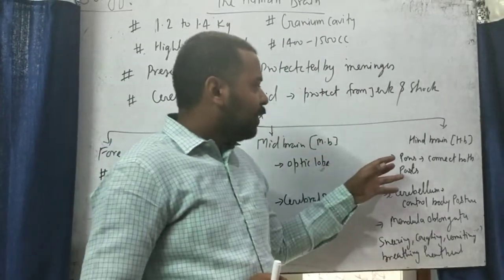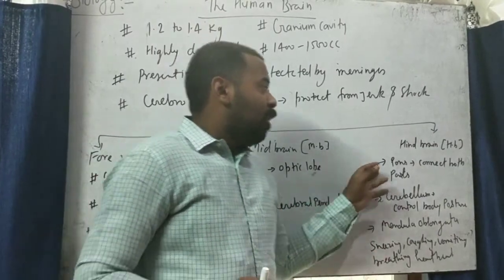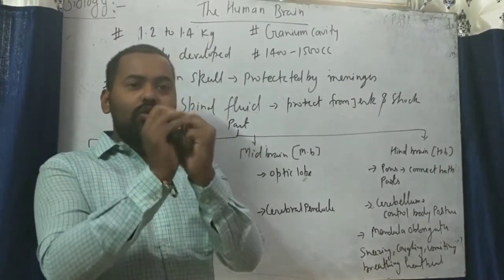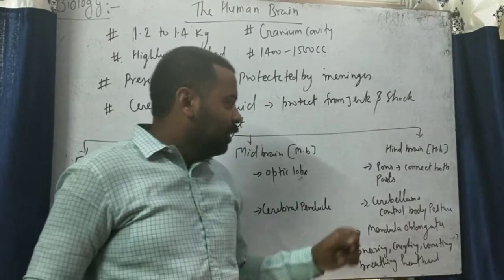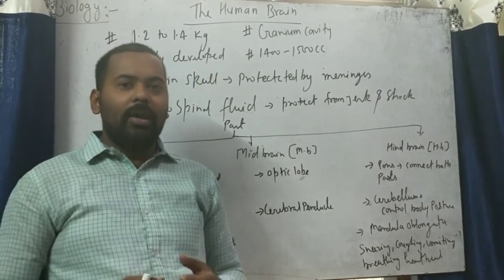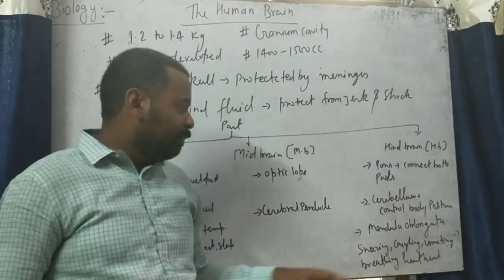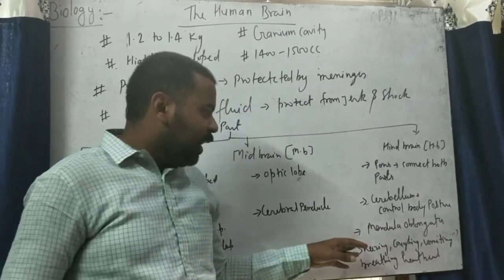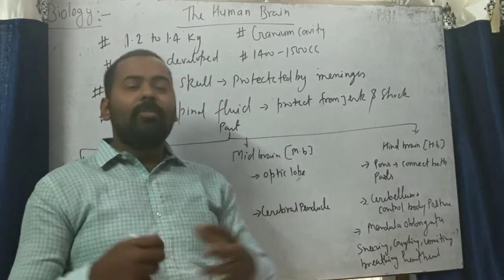The third part is the hindbrain, the last part of the brain, having three parts: pons, cerebellum, and medulla oblongata. Pons helps to join the two hemispheres of the brain and coordinate impulses to both sides. Cerebellum controls body posture — if someone consumes alcohol they cannot stand properly because the cerebellum is affected. The last part, medulla oblongata, connects the brain to the spinal cord and controls involuntary actions like sneezing, coughing, vomiting, heartbeat, and breathing.